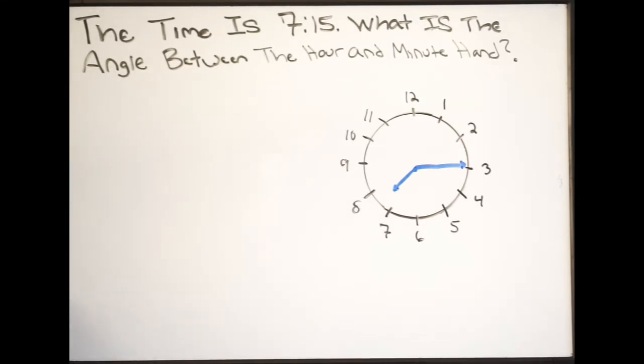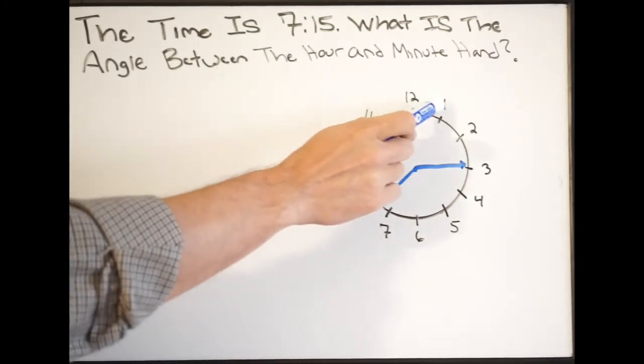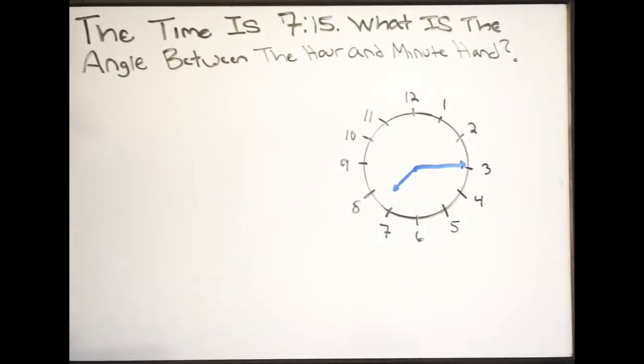Well we know that if we do a complete revolution in a circle, that's going to be 360 degrees. So let's apply this to the clock and let's talk about minutes. If I go one full revolution around, that's going to be 60 minutes. So I want to know how many degrees per minute there are.